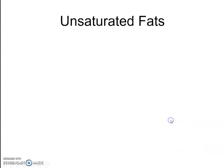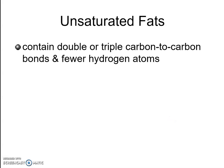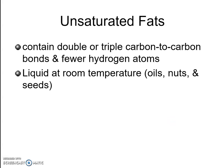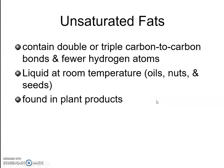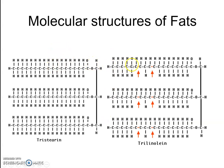Unsaturated fats have double bonds within the carbon-to-carbon chain and fewer hydrogen atoms. These fats tend to be liquid at room temperature and are found in oils, nuts, and seeds — more commonly in plants. This is a better type of fat. However, large consumption of either saturated or unsaturated fat, if not burned off, will cause weight gain.